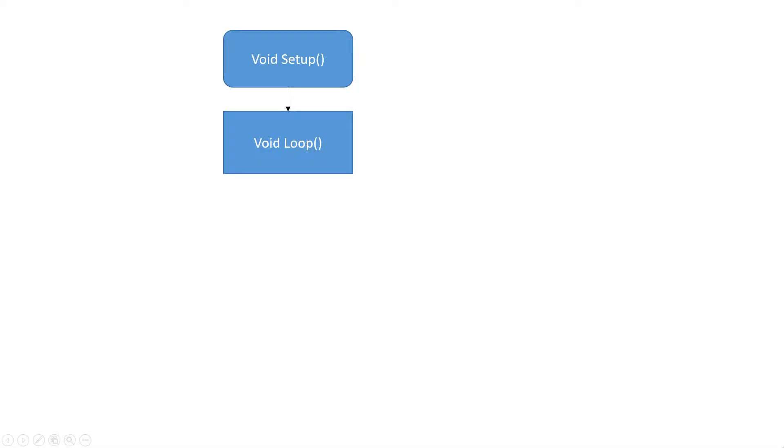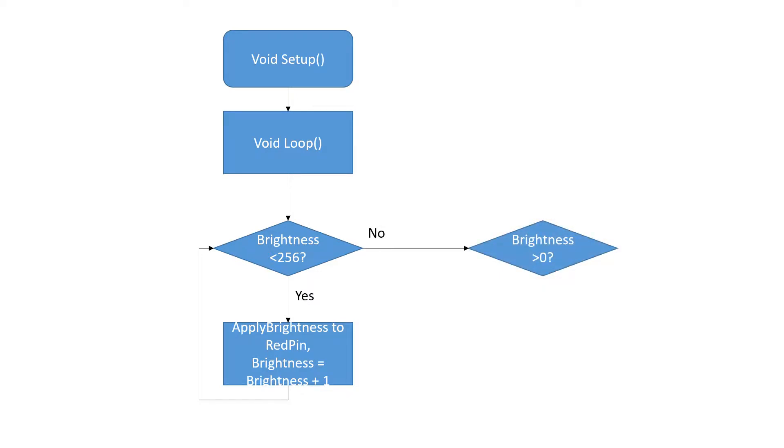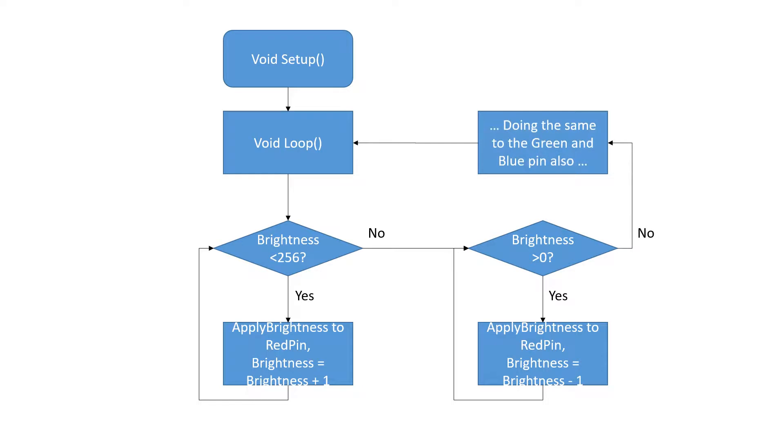This project will work like this. We are going to initialize three pins for the red, green and blue component of our LED. Then we are going to increment one color's brightness to the maximum value and then decrease to the minimum. We do this for all three components then repeat.